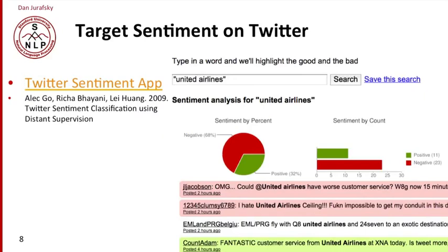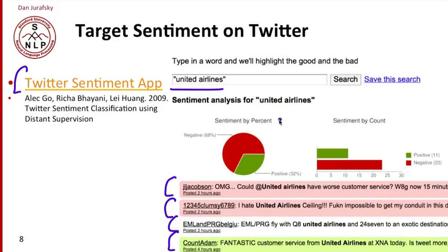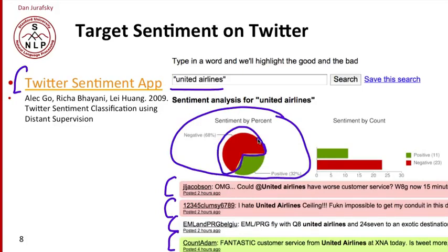Twitter sentiment has also been used to predict people's sentiment toward brands in general. Here's the Twitter Sentiment app — a project by Alec Goh and colleagues at Stanford — which showed that you can take a query like 'United Airlines,' look at all the tweets mentioning United Airlines, and determine if they're positive, negative, or neutral, and then summarize all of the sentiments. At least when this query was run, people had some pretty negative things to say about United — more than they had positive things to say. So we can use Twitter to see how people feel about all sorts of things.